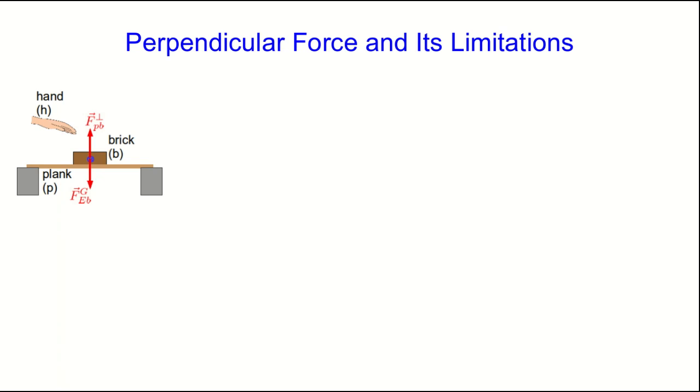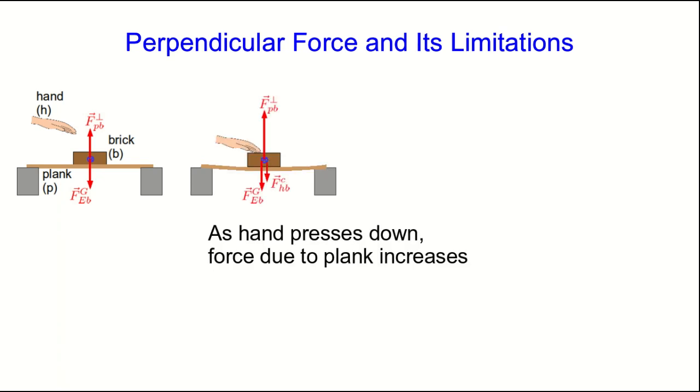Imagine that the brick is just sitting on the plank, and we know that there's an upward perpendicular force due to the plank acting on the brick, and that it balances the downward gravitational force on the brick. Now, if you press down a little bit on the brick, then the upward force by the plank has to increase, because the acceleration of the brick is zero, and so the vector sum of forces still has to be zero.